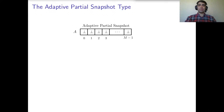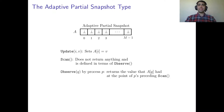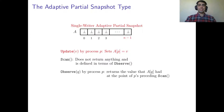We extended the definition of the snapshot type to the adaptive partial snapshot that supports three operations: update, scan, and observe. Update(i, v) is identical to the snapshot type and changes the ith component of the array to v. However, scan doesn't return anything, and its behavior is defined in terms of another operation, observe. An observe(q) operation by process p returns the value that the qth component had at the point in time of p's preceding scan. Identical to the snapshot type, an adaptive partial snapshot is single-writer if the number of components equals the number of processes and a process can only update its corresponding component.